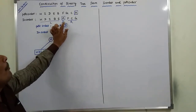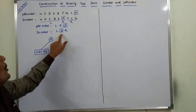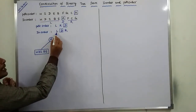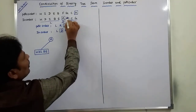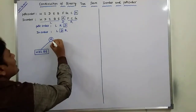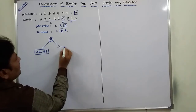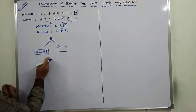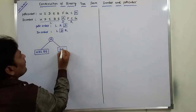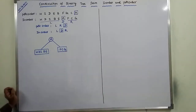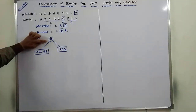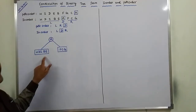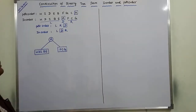In the in-order sequence, before the root node A, whatever sequence is there is the left subtree sequence. After the root node, the sequence is the right subtree sequence. So the left subtree sequence is H, D, I, B, E, and the right subtree sequence is F, C, G.